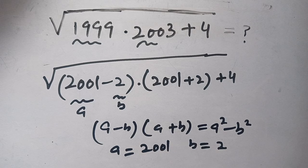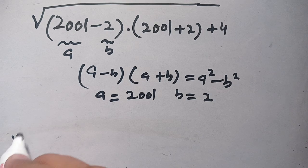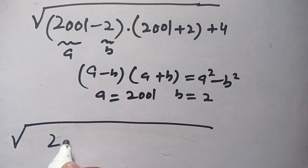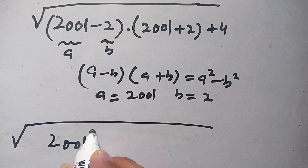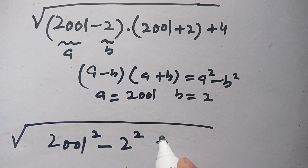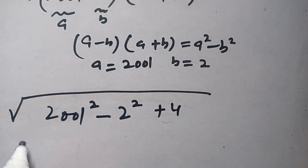Now in the next step, we can write this as square root of a², a² means 2001², minus b², which means 2², and plus 4 as it is.